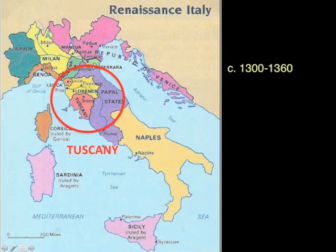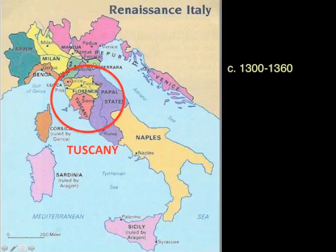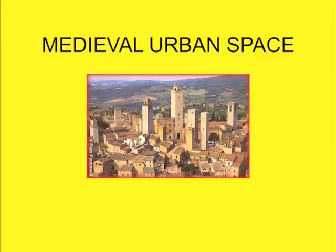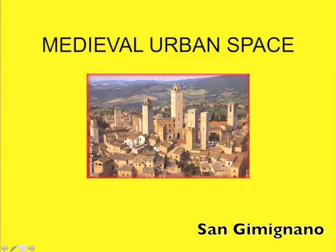The area we're going to concentrate on is Tuscany. We looked a little bit at Tuscany yesterday when we saw Siena and Florence and Pisa and a number of the great cathedral towns in that area. The first thing I want to mention is the nature of medieval urban space — very dense, very tightly tangled. The town we're looking at on this image is San Gimignano.